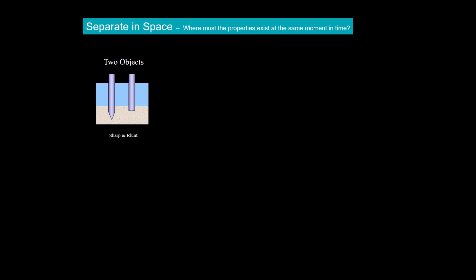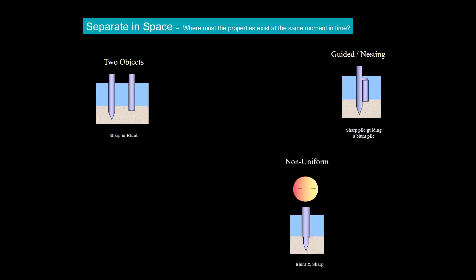With guided and nesting, a sharp pile nestles against a blunt pile. With a non-uniform pile, a part of the pile is sharp and a blunt ridge is used to support the vertical load.